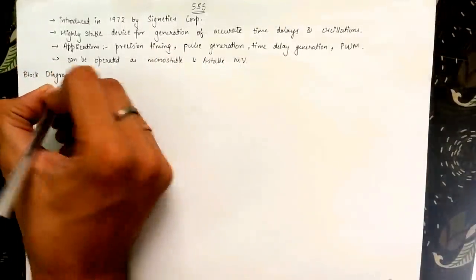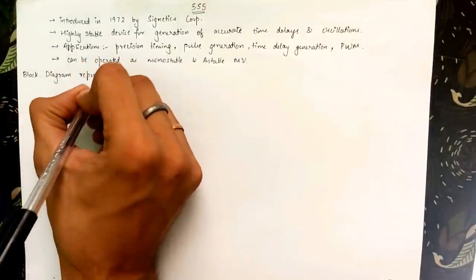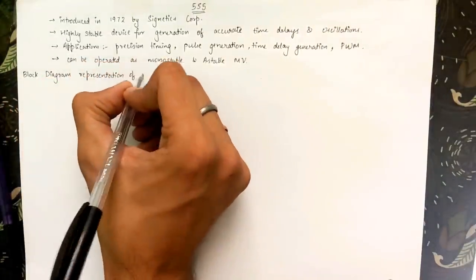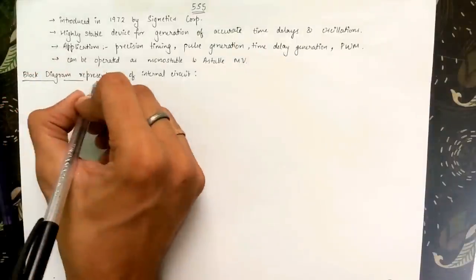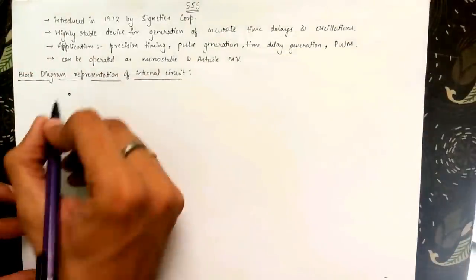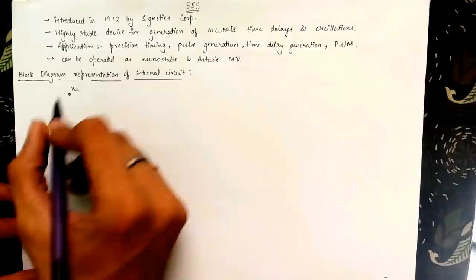Understanding the working of the internal circuit at transistor level will be very difficult. So we will be looking at the block diagram representation of the 555 Timer IC's internal circuit. Let's start with the block diagram representation of the IC.